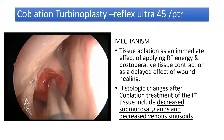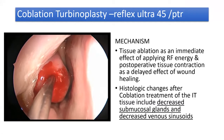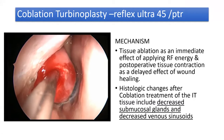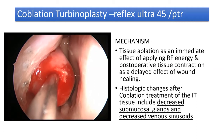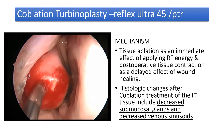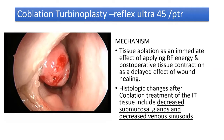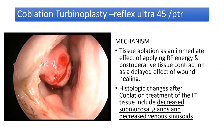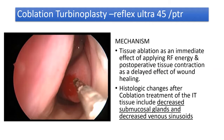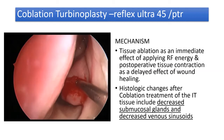How does coblation work in this area? The Reflux Ultra 45 wand is not a plasma wand — you need to inject the tissue with saline first. Then you apply the Reflux Ultra 45 wand into the tissue and ablate for about 15 seconds, withdrawing at each mark to ablate the anterior, middle, and posterior thirds of the turbinate.